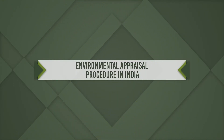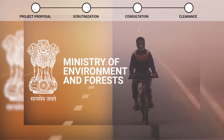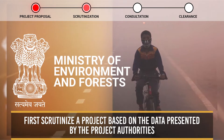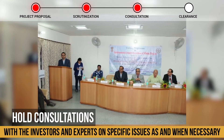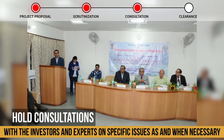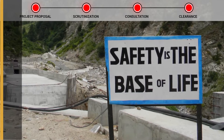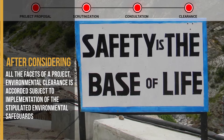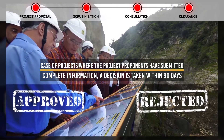Let's see the procedure of environmental appraisal in India. An appraisal committee constituted by the Ministry of Environment and Forest first scrutinizes a project based on the data presented by project authorities. If necessary, the Ministry of Environment and Forest may also hold consultations with investors and experts on specific issues as and when necessary. After considering all the facets of a project, environmental clearance is accorded subject to implementation of the stipulated environmental safeguards. In cases where project proponents have submitted complete information, a decision is taken within 90 days.